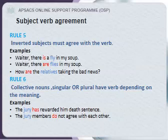Rule six — collective nouns, whether singular or plural, take a verb depending on the meaning. Example: the jury has rewarded him a death sentence. The jury members do not accept the verdict and agree with each other.